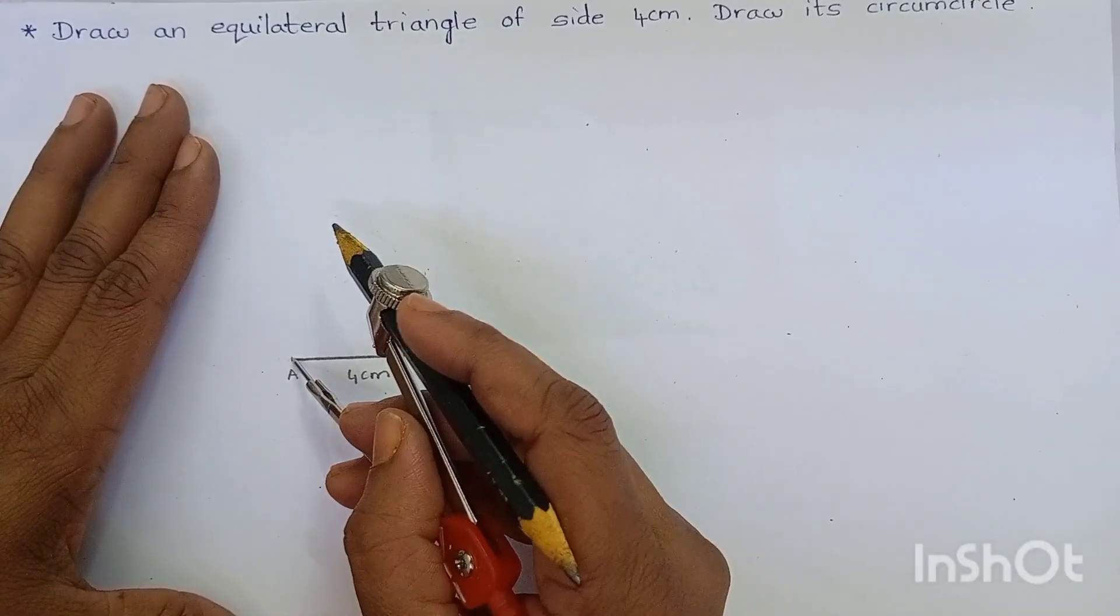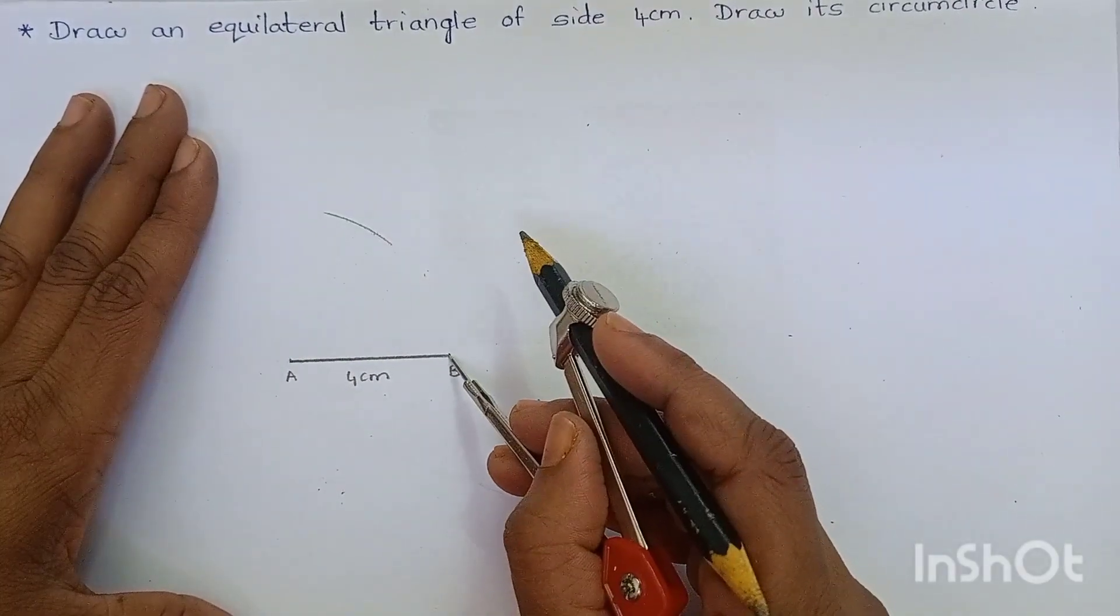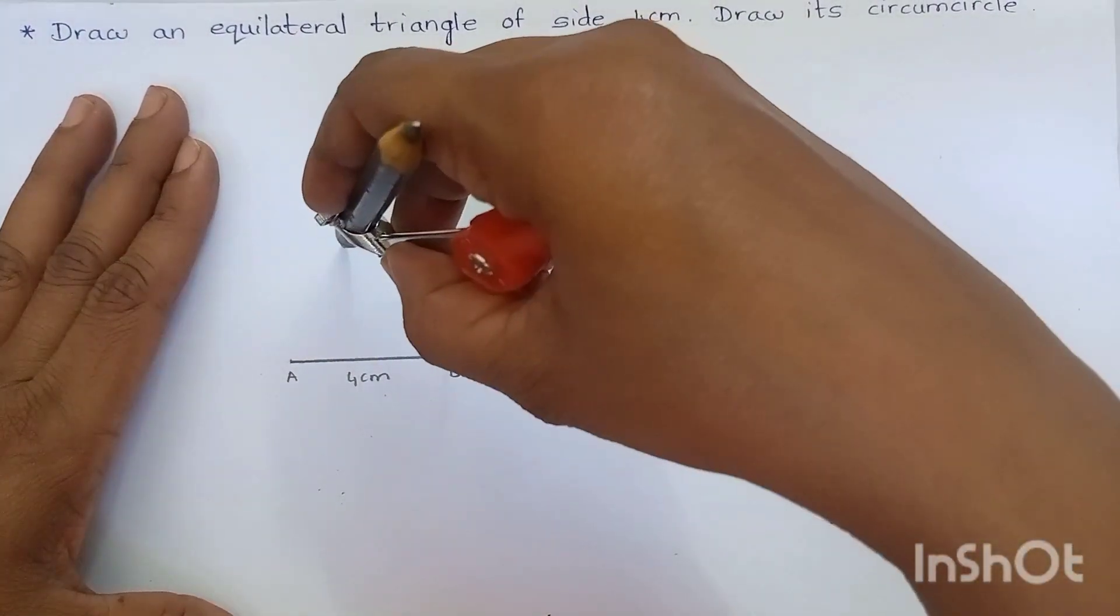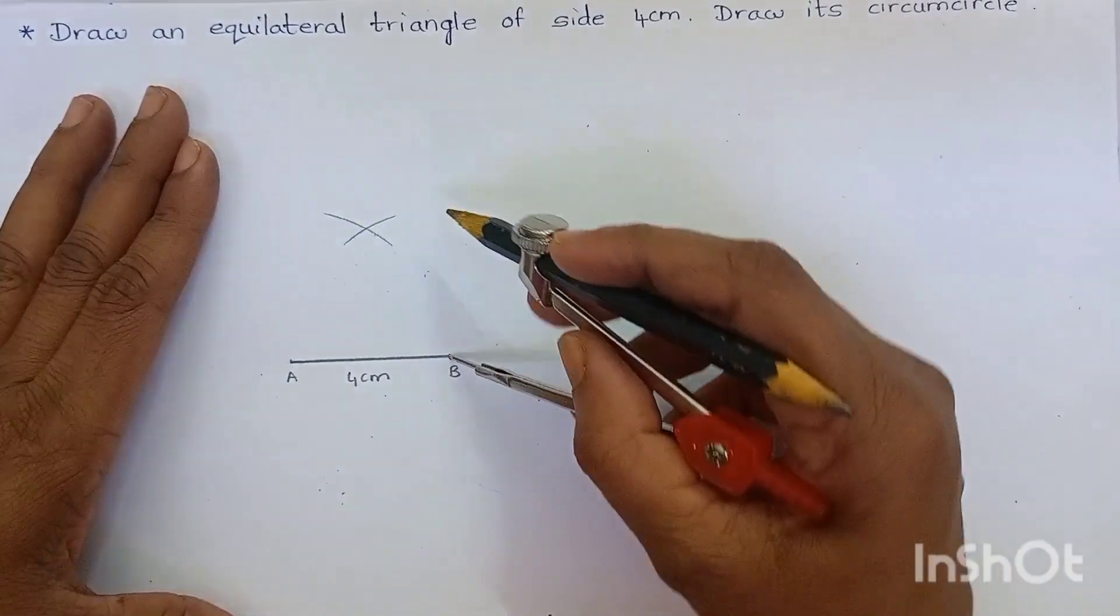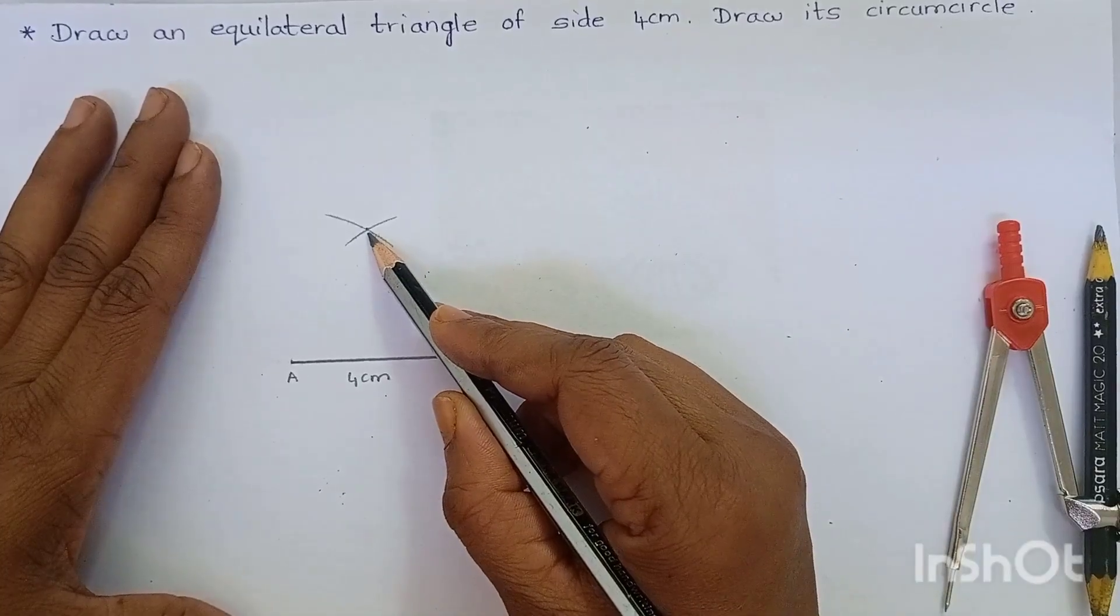From the point A, mark an arc. From the point B, mark an arc. Here it is also 4 cm. Name this point as C.